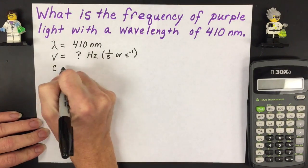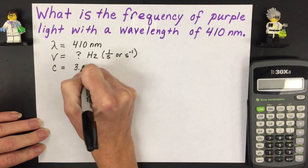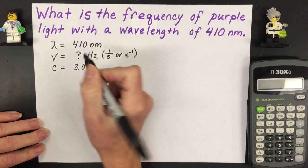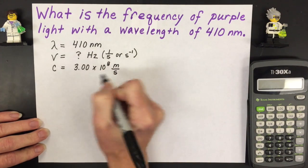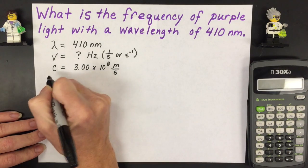You always have the speed of light constant which is 3.00 times 10 to the 8th meters per second. Some people do use 2.98 and that's fine also.